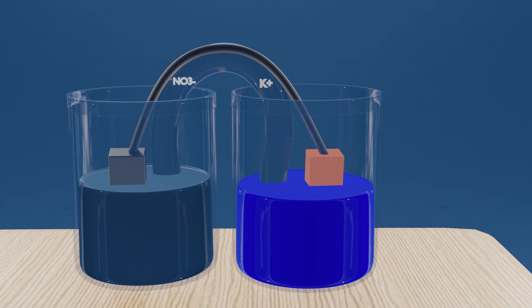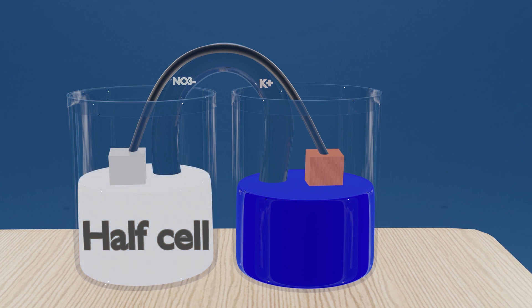So let's talk about the basic structure of a voltaic cell, illustrated by the most common example, which is the Daniel cell. It is composed of two half cells connected by a salt bridge.